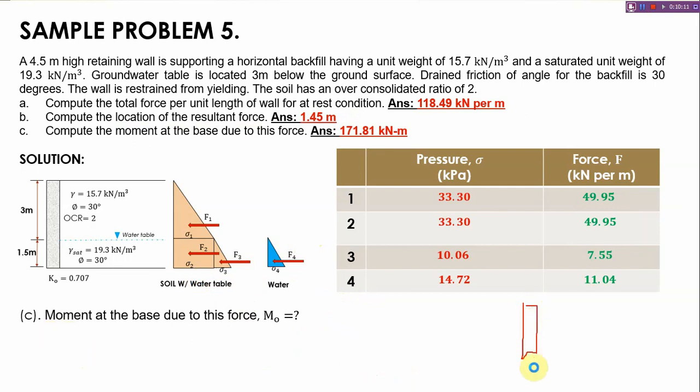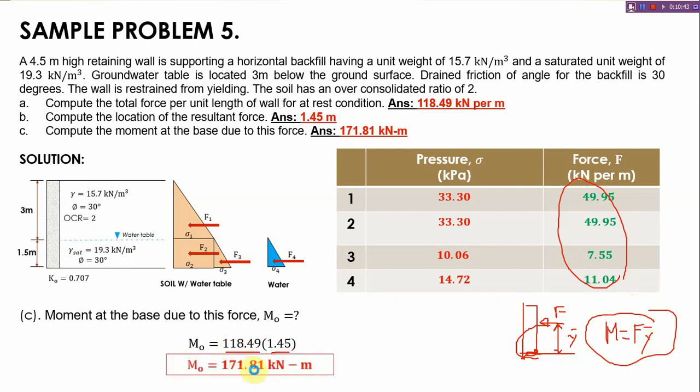By solving we can get 1.45 meters as the location of the resultant force, so that's our letter B answer. Now for letter C, moment at the base due to this force. We have resultant force located at y bar distance from the bottom of the wall, so it will create a moment. The formula is F times y bar, so 118.49, this is our total force, times 1.45, this is your y bar, and we have this moment at the base which is 171.81 kilonewton meters.